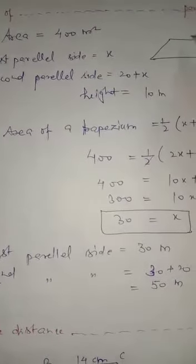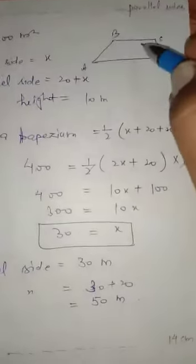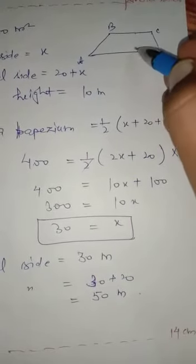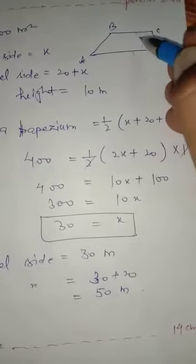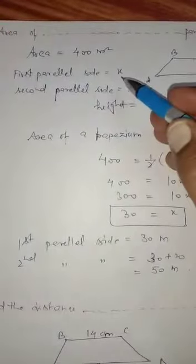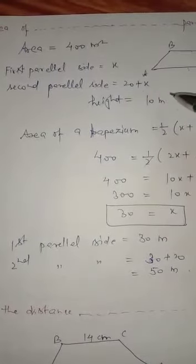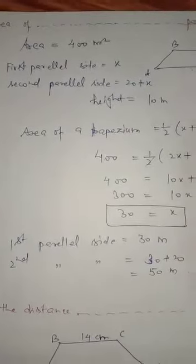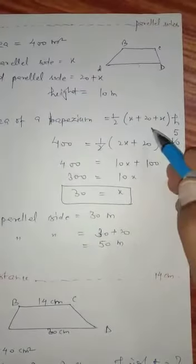Height is 10 meters, area is 400 square meters. Area of trapezium equals one-half sum of parallel sides times height.